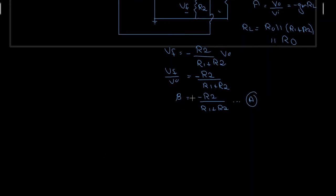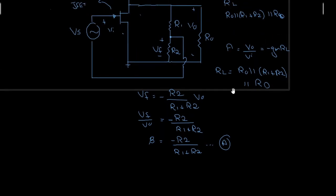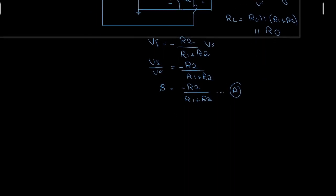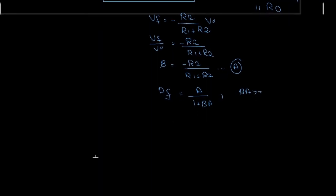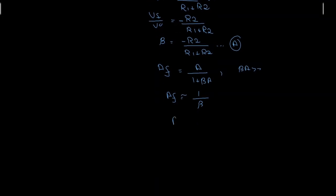To find the gain with feedback: we found the gain without feedback which was minus gm·RL, where RL is R0 parallel to R1 plus R2 parallel to Rd. The gain with feedback equals A divided by (1 + beta·A). If beta·A is very much greater than 1, this simplifies to approximately 1/beta, which means Af is approximately equal to minus (R1 + R2) divided by R2.